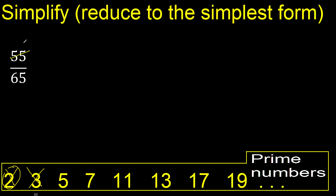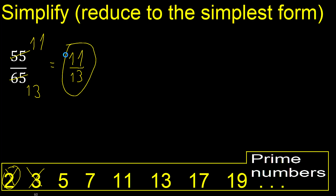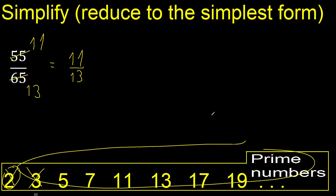55 divided by 5 is 11, and 65 divided by 5 is 13. We finish here because 11 and 13 cannot be divided by the same number.